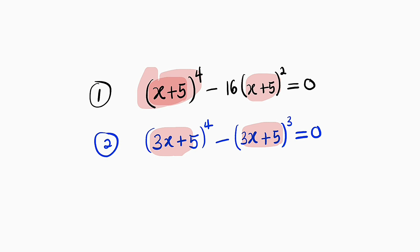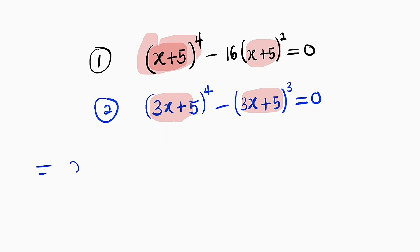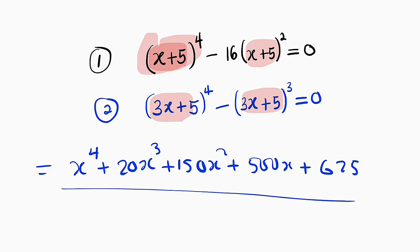Secondly, expanding these terms will give us very large numbers. For example, if you expand (x + 5) raised to the power of 4, you're going to get something like x to the power of 4, plus 20x to the power of 3, plus 150x squared, plus 500x, plus 625. We have five terms with large numbers, and we still have another one to expand, so we need a lot of simplification.